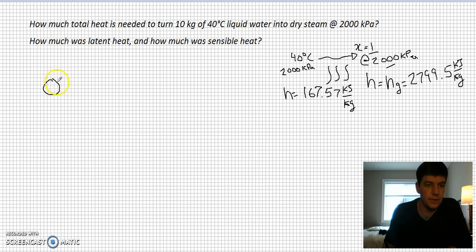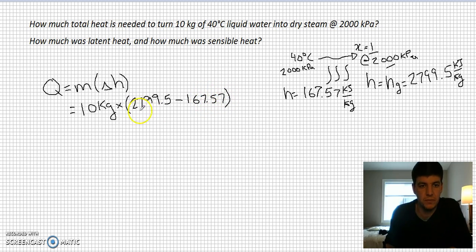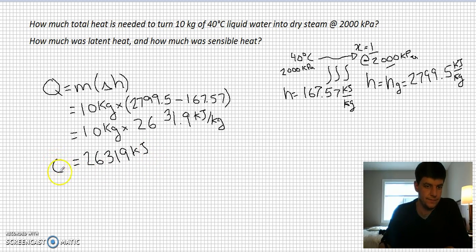The total heat, Q, equals mass times the change in enthalpy. So in this case, 10 kilograms times the change in enthalpy, which ended up being 2799.5 minus 167.57, so it changed by this gap. That's 10 kilograms times 2631.9 kilojoules per kilogram, meaning the total amount of heat is 26,319 kilojoules.